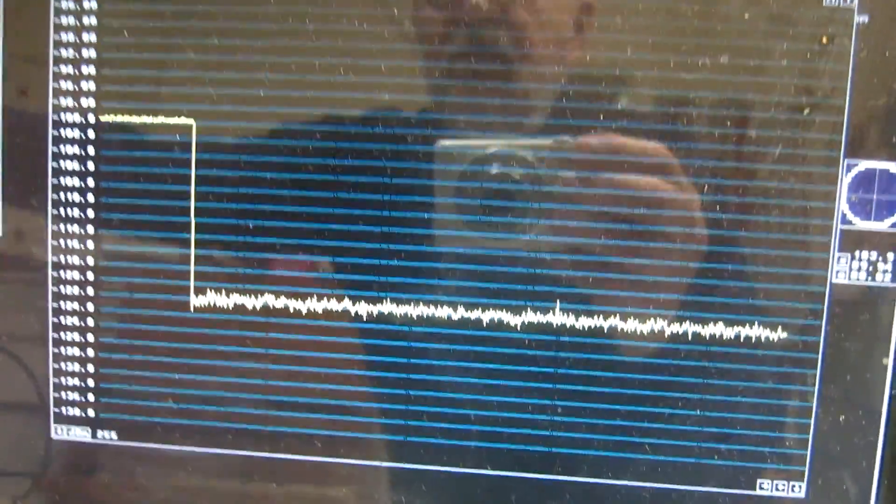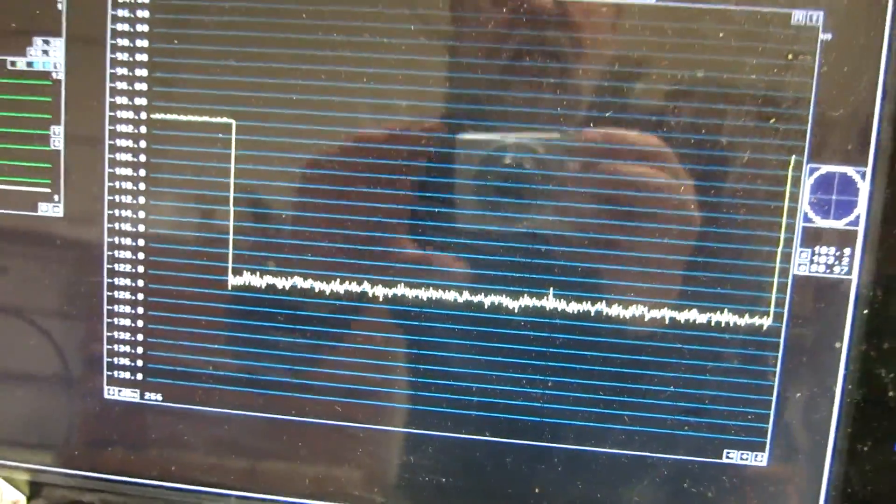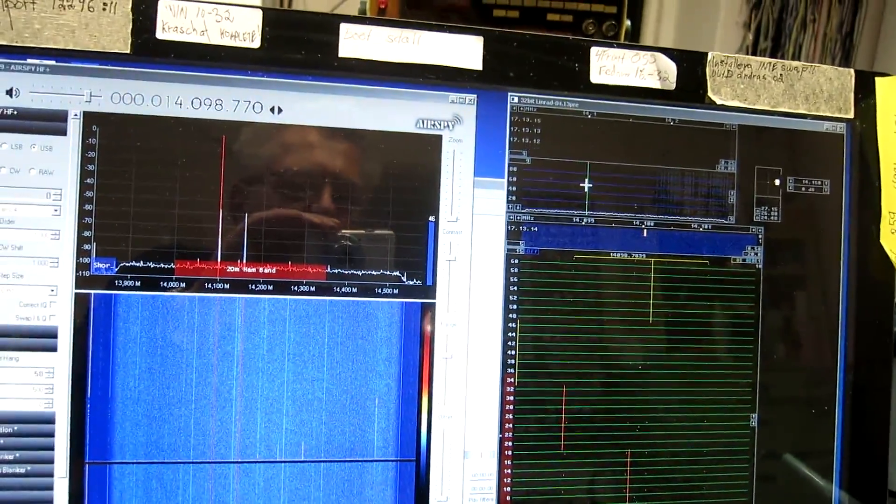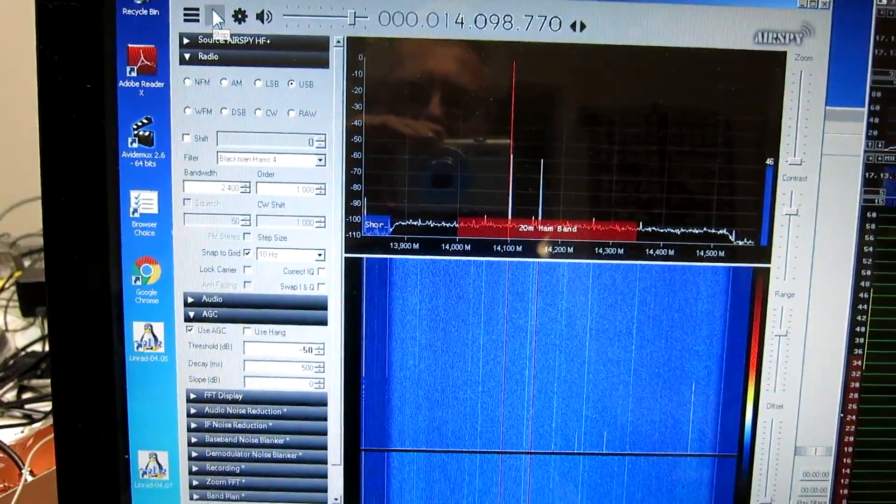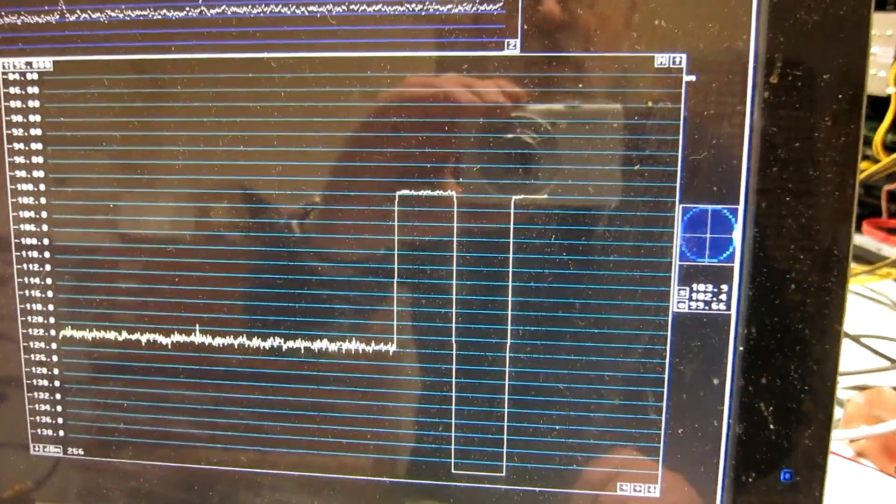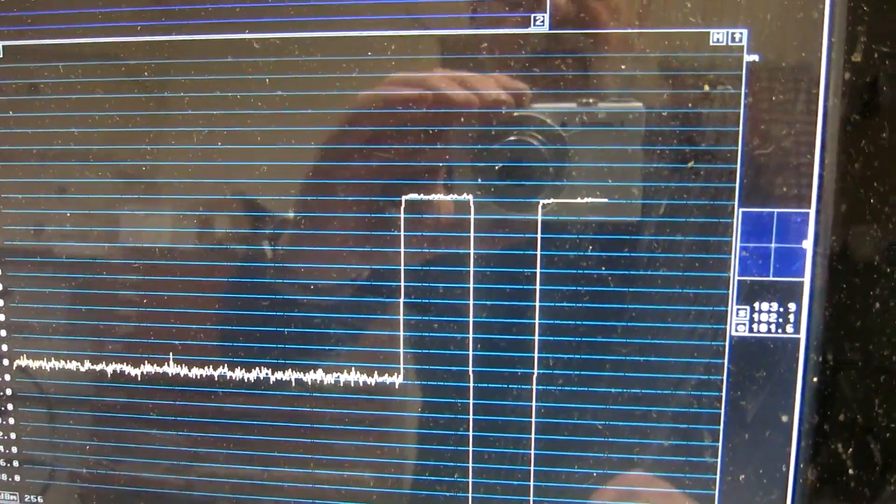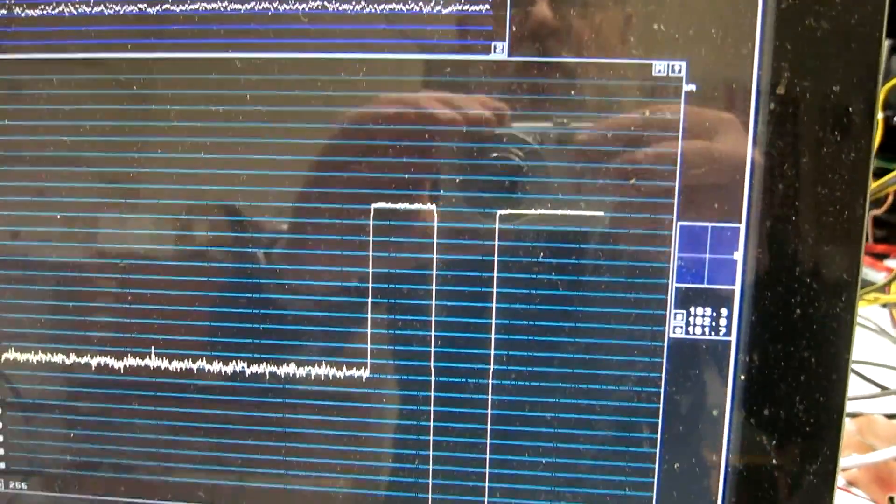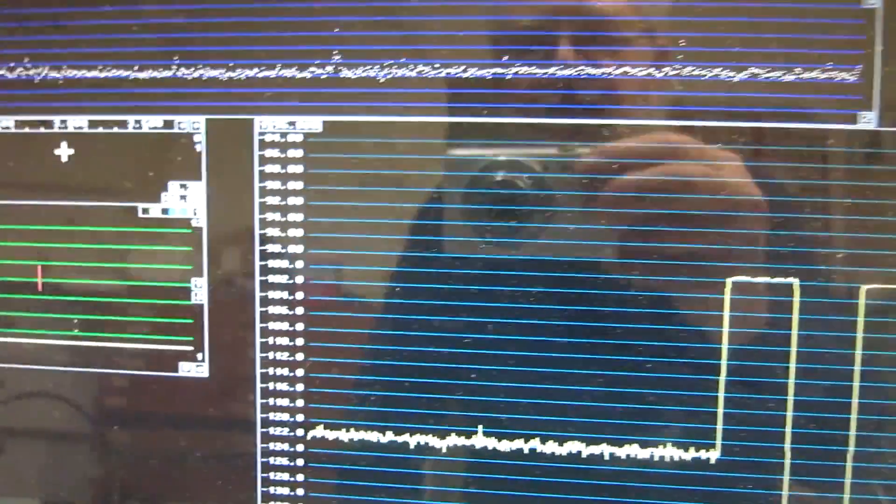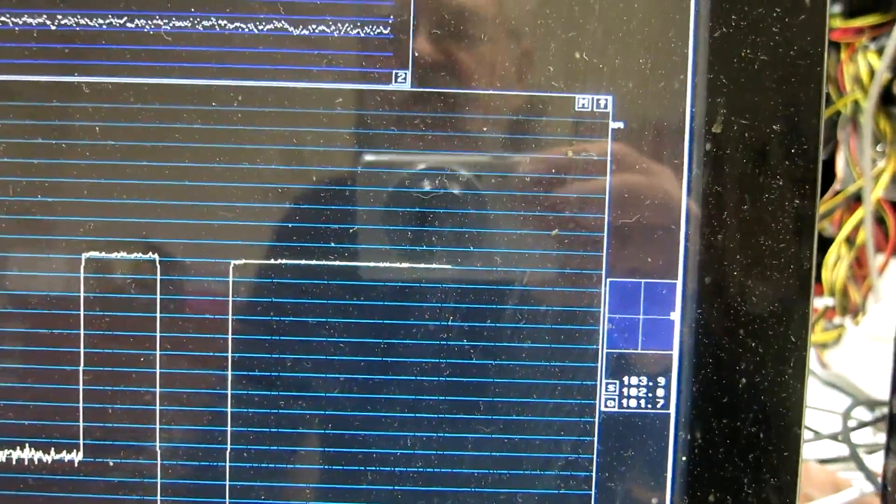And I switch on the signal again, and switch off the Perseus, and switch on the AirSpy HF+. And as you can see, I have set the amplitudes for this to show the same, minus 100 dBm, because the signals are the same.